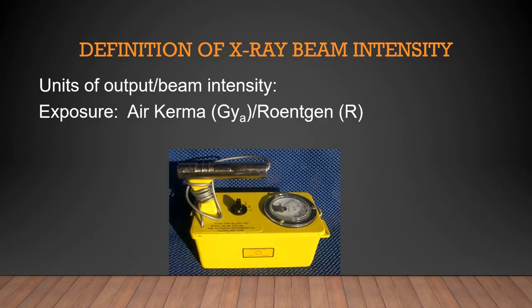Let's start with exposure. We are looking at air kerma, which is the kinetic energy released in matter. It is the kinetic energy transferred from photons to electrons during ionization and excitation. Previously we talked about what happens when an incident X-ray photon comes in and strikes the X-ray tube target. Air kerma is measured in joules per kilogram, where one joule per kilogram equals one gray. Anytime you think of air kerma, air kerma is the unit of radiation exposure.